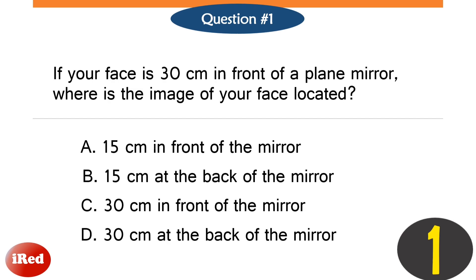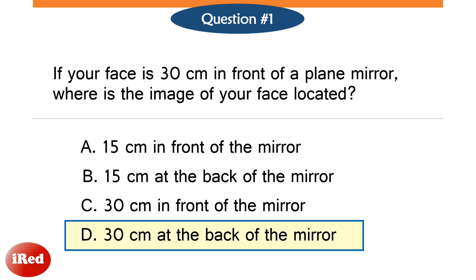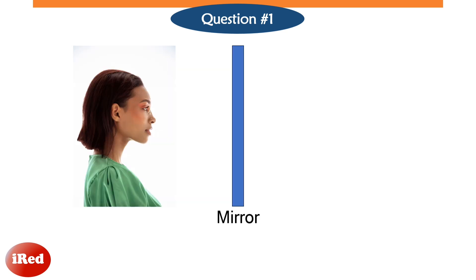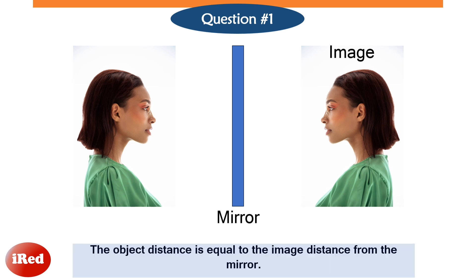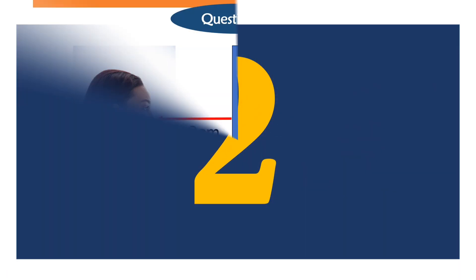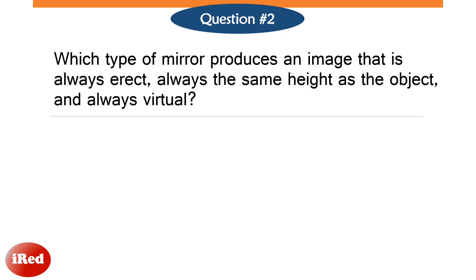The correct answer is letter D: 30 centimeters at the back of the mirror. The image formed by a plane mirror is always located at the back of the mirror and always the same distance as the object from the mirror. If the object is located 30 centimeters from the mirror, then the image is also formed 30 centimeters from the mirror at the back.